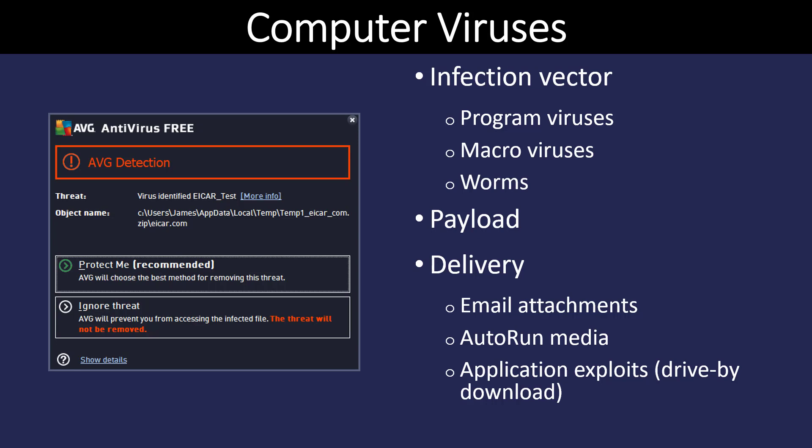And then we have application exploits. An application exploit is most commonly a virus that is infecting a website. Somebody goes to download the application, it has a virus built into it, and when they download it and install it or run it through the web browser, it's going to go ahead and run that exploit.